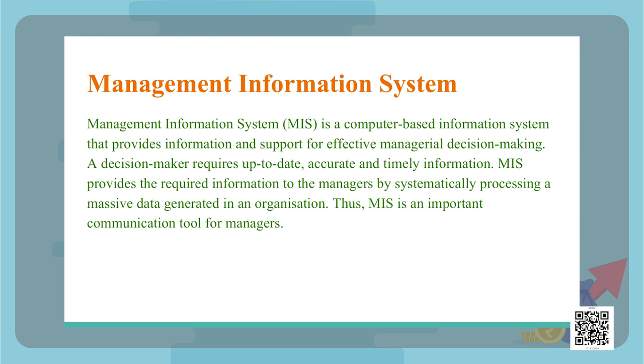At this point we end the chapter of Controlling. In this chapter we discussed how an organization reviews its activities and checks whether they were in accordance with the plans. We covered the steps of controlling, the benefits and limitations of controlling, the relationship between planning and controlling, and the techniques of controlling classified into traditional and modern techniques. I hope you were thorough with this chapter. I will see you in the next class — till then, please take care of yourselves.